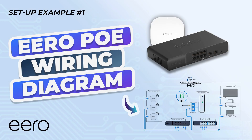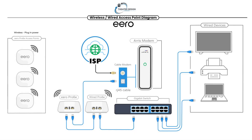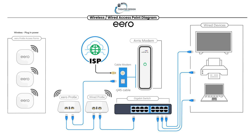Welcome back to Tyler Theater Design Company. This is example number three of an Eero wiring diagram — a wireless slash wired diagram. If you've watched previous videos, example one covers the ISP and cable modem, explaining that you don't have to use a cable modem — you could use T-Mobile, fiber, or whatever you prefer. You need an internet service provider obviously. Same flow here: cable modem in, wide area connection out, running into an Eero Pro 6.